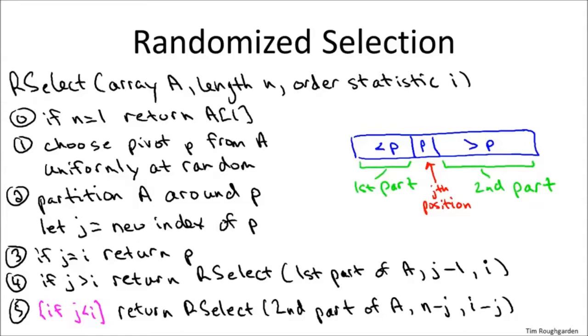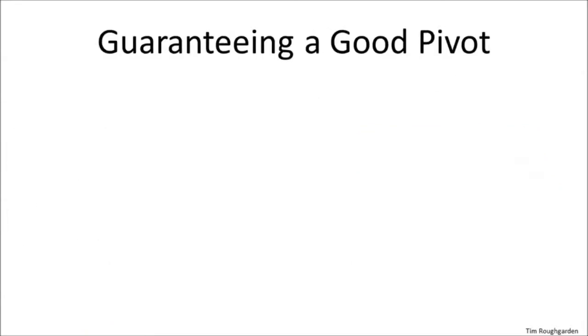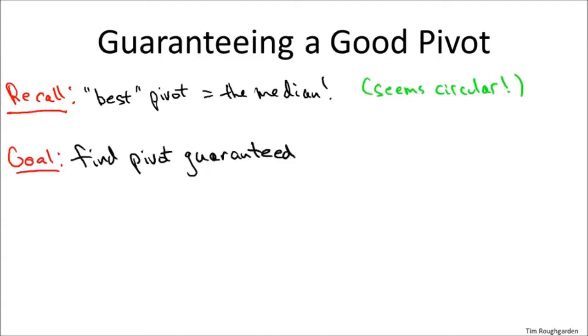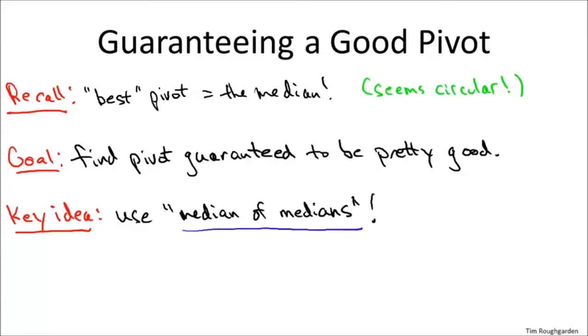So now the big question is, suppose we weren't permitted to make use of randomization. Suppose this choose a random pivot trick was not in our tool box. What could we do? How are we going to deterministically choose a good pivot? Okay, so let's just remember quickly what it means to be a good pivot. A good pivot is one that gives us a balanced split after we do the partitioning of the array. That is, we want as close to a 50-50 split between the first and the second parts of the partitioned array as possible. Now, what pivot would give us the perfect 50-50 split? Well, in fact, that would be the median. But that seems like a totally ridiculous observation because we canonically are trying to find the median.